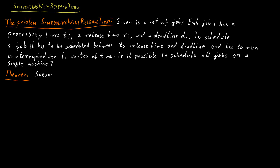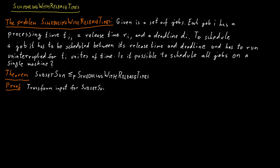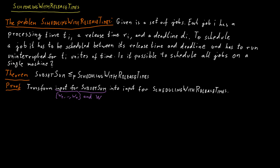Subset Sum polynomial-time reduces to the problem Scheduling with Release Times. In Subset Sum, the input consists of n numbers W1 to Wn and a target number W. We can transform such an input into an input for Scheduling with Release Times in such a way that it is possible to schedule all the jobs on a single machine between their release time and their deadline, if and only if the answer to the Subset Sum instance is yes.